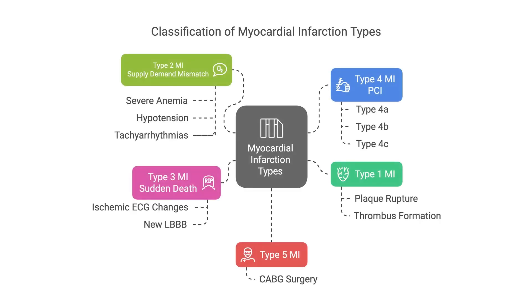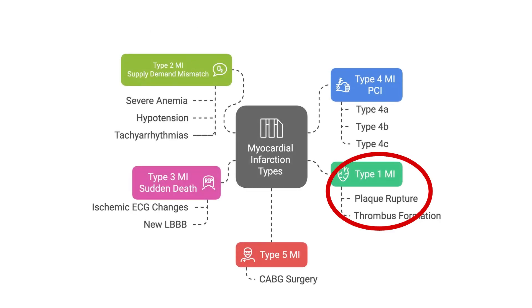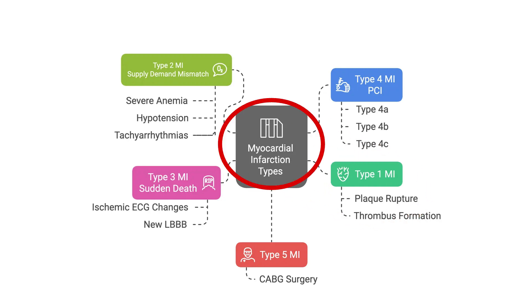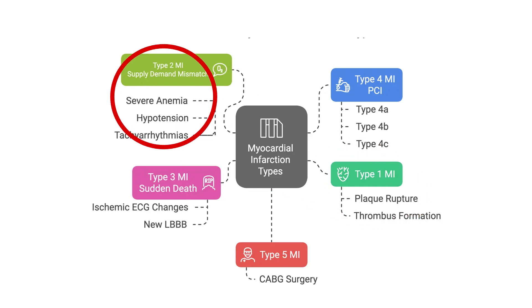Based on the universal definition, there are at least five types of MI. Type 1 MI — the most common — is spontaneous myocardial infarction due to atherothrombotic coronary disease caused by plaque rupture, erosion, or fissuring with subsequent thrombus formation. Type 2 MI is an imbalance between myocardial oxygen supply and demand due to conditions like anemia, hypotension, or tachyarrhythmias, without an acute atherothrombotic event.